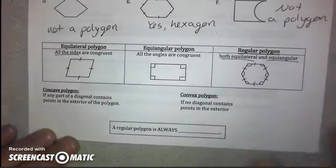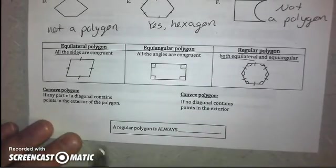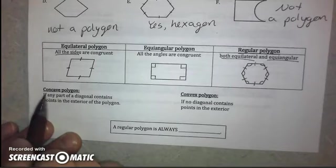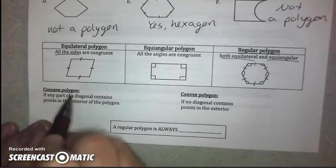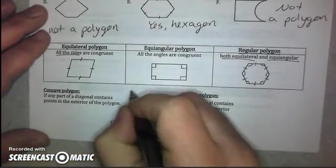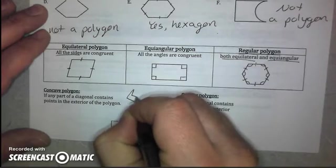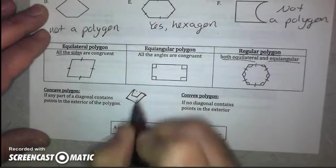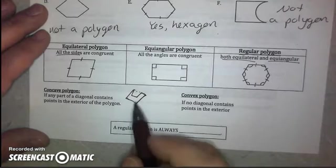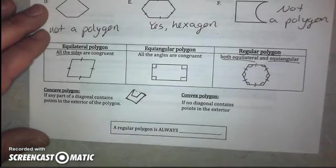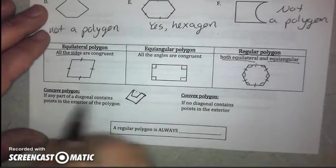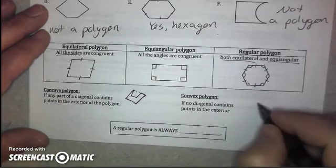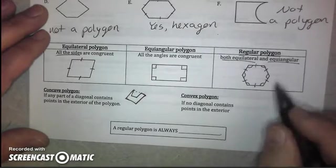We can also classify polygons as being concave or convex. Now, the concave and convex definitions really pertain to the diagonals. If a polygon is concave, that means that part of a diagonal contains points in the exterior of the polygon. So we might have a shape that looks like this. That is a polygon. These are all sides. But if I were to draw this diagonal, it goes to the exterior. So that's concave. You can think of it this way. It looks like this shape has been caved in. So it's a concave polygon.